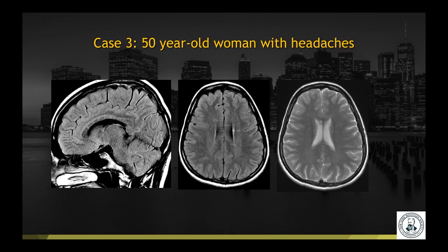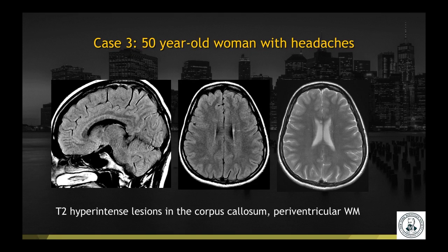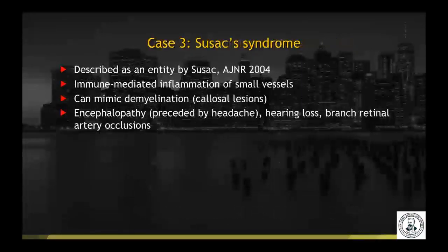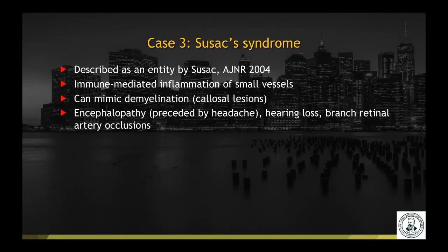Case number three is a 50-year-old woman with headaches. T2 FLAIR and T2-weighted imaging demonstrates T2 hyperintense lesions in the corpus callosum as well as the periventricular white matter. This is a case of Sussac syndrome, first described by Dr. Sussac. It is an immune-mediated inflammation of small vessels, but because of the imaging appearance it can mimic demyelination due to the callosal lesions. There is a classical clinical triad of encephalopathy, hearing loss, and branch retinal artery occlusions.